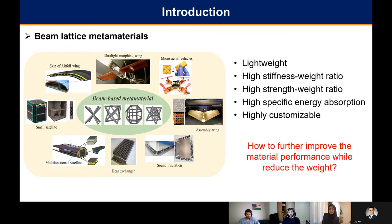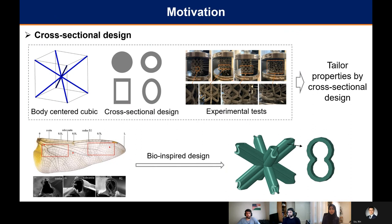The goal of our research was to figure out how we can further improve upon that concept and squeeze better performance out of it while reducing weight, so we looked at the cross-sectional design for that. We started by basing our research on previous work which had a body-centered cubic metamaterial with different cross-sectional designs. We created data through experimental tests and came to the conclusion that you can tailor properties by cross-sectional design.